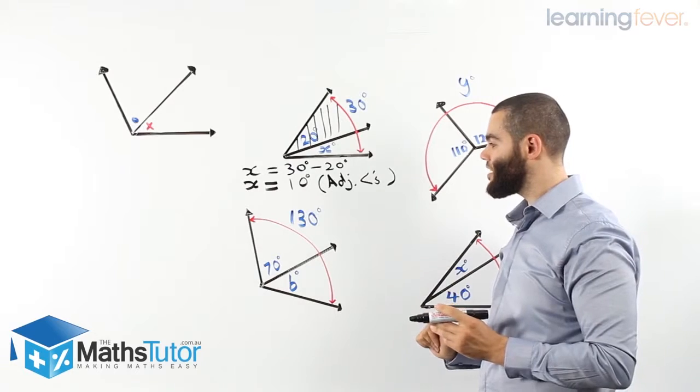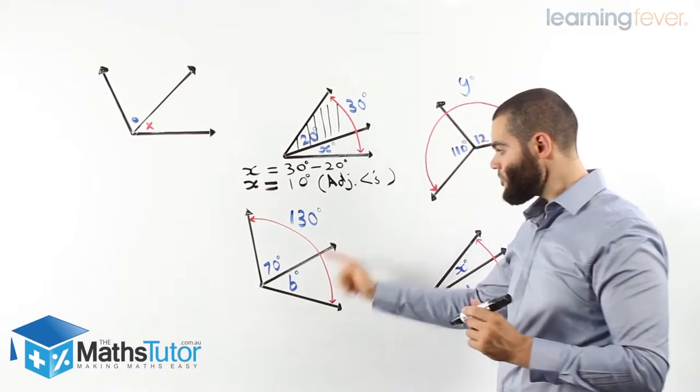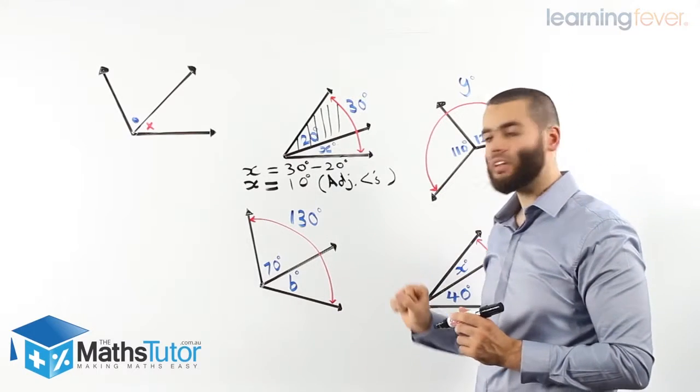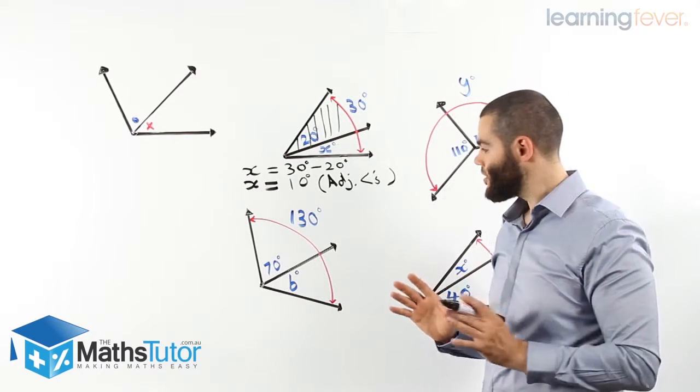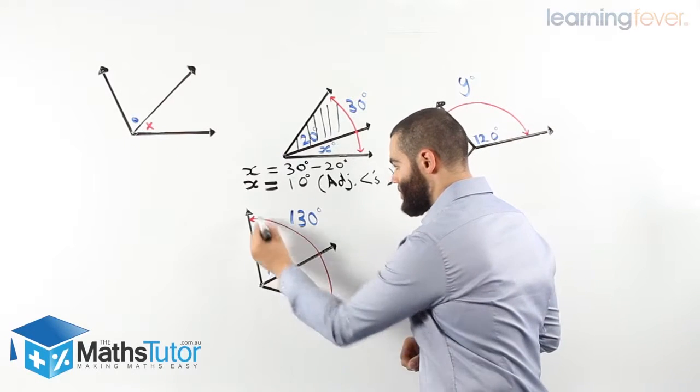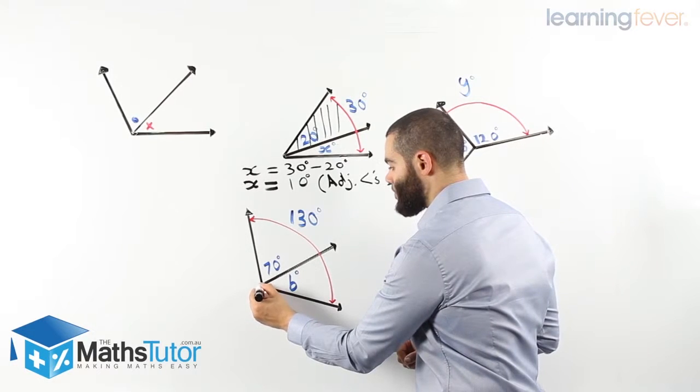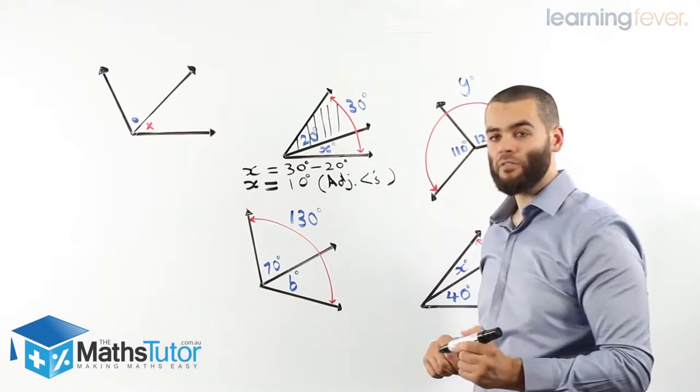Let's use another example, hopefully you'll get a better understanding. Once again, we look at these angles here, and we notice these look like adjacent angles. They both share a common arm, and they both are meeting at a vertex.